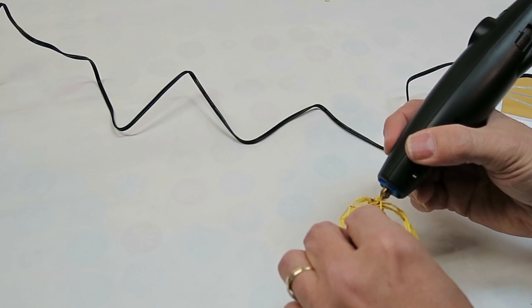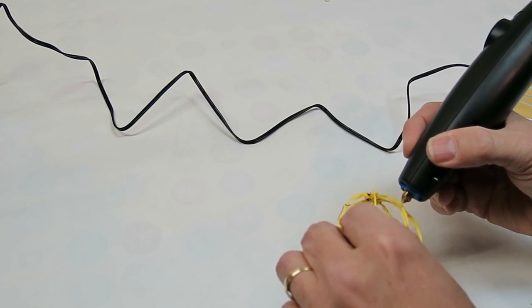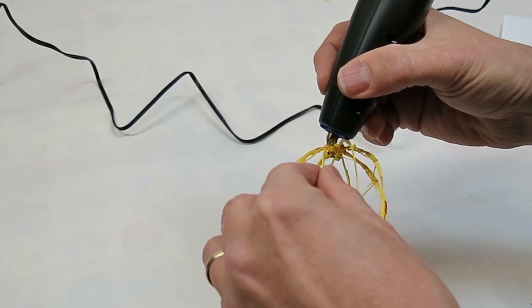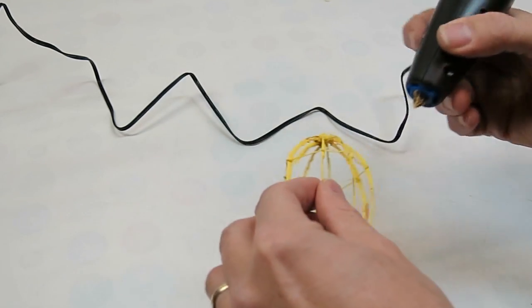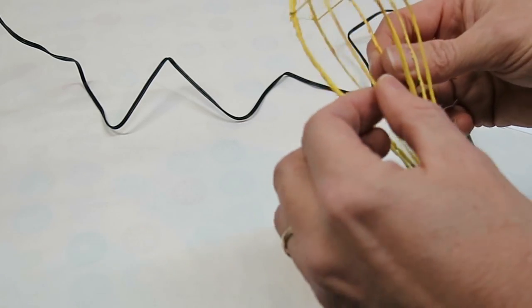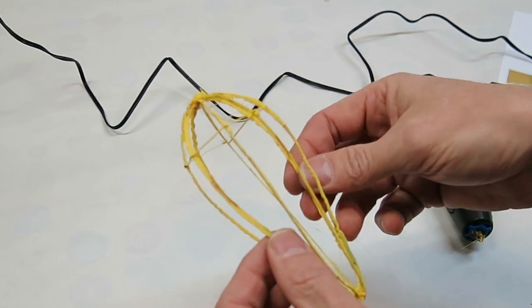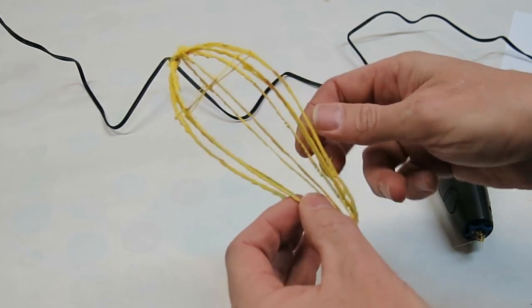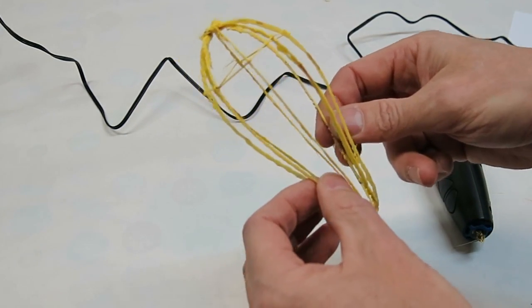So there you go. So there's the first wrap around and I'm going to keep wrapping all the way around until I get some more color on there and it's nice and stable.